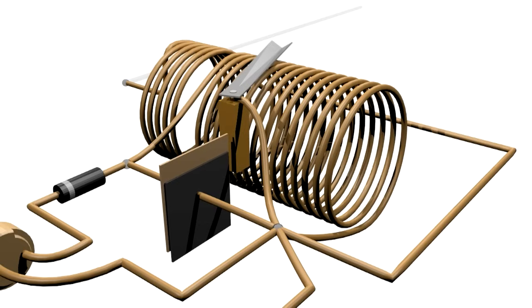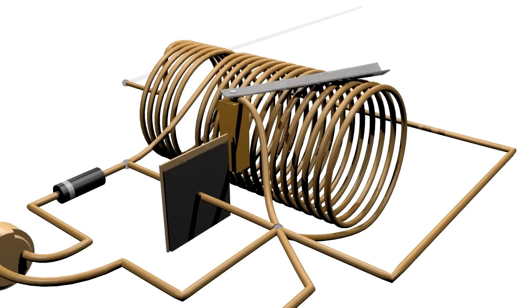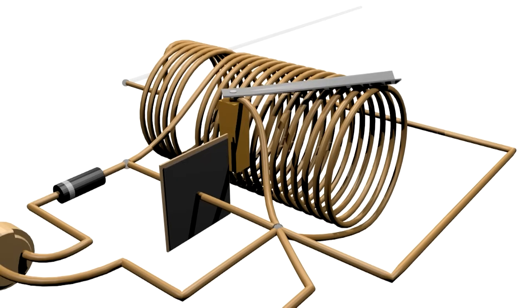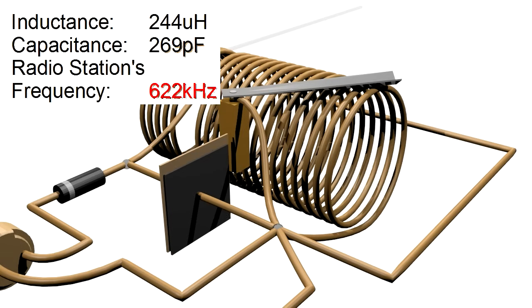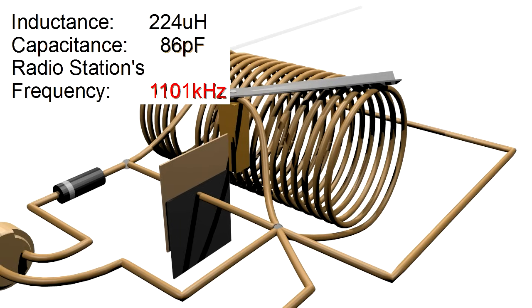One tuning approach is to put the wiper blade at the far end of the coil, to set the inductance to the highest possible value, and leave it there. Then manipulate just the capacitor's capacitance by slowly adjusting one of the plates. That will result in going through every possible AM radio frequency. Well, provided you've designed your coil and capacitor to have suitable inductance and capacitances to cover all frequencies.